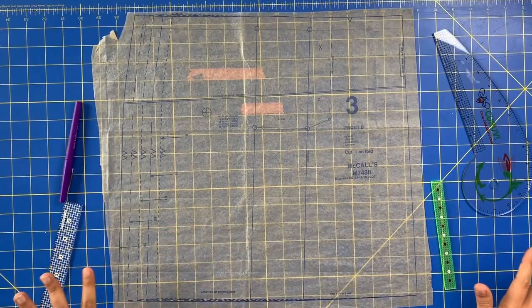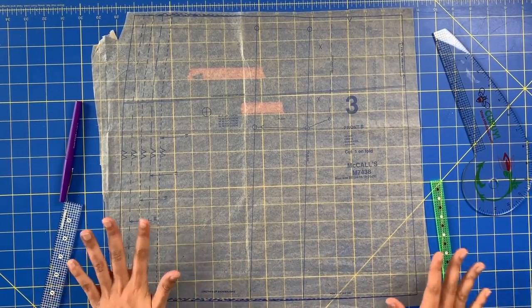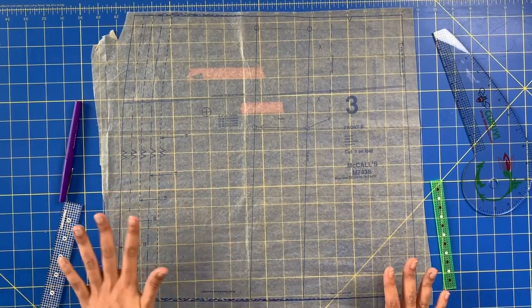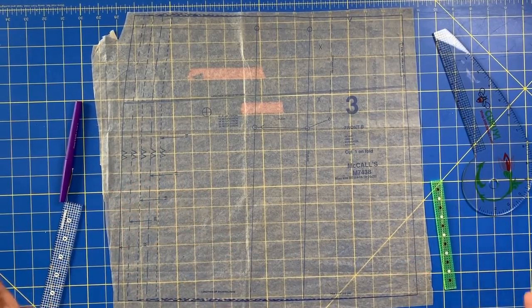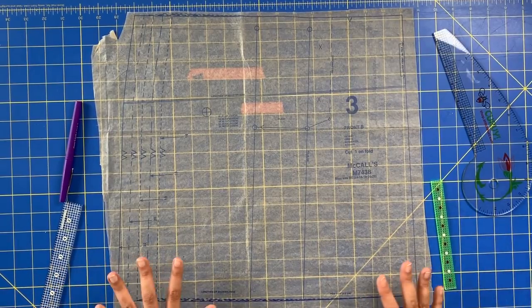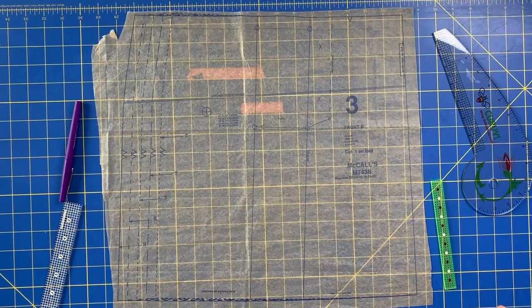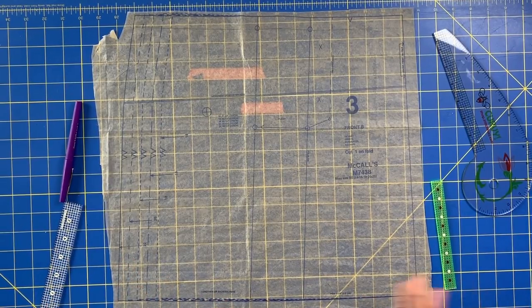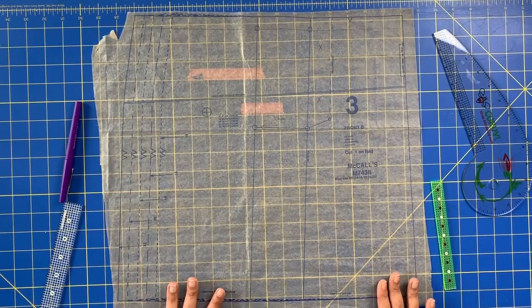One of the most common pattern adjustments is grading between sizes. That can happen whether you're making a top, dress, skirt, pants, really any garment. If you are falling in different size categories in your bust, waist, or hip, then you're going to want to grade out your side seams. And it is super simple to do.